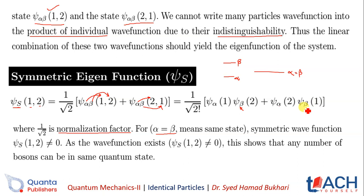The wave function exists — it does not vanish, it does not become zero. This shows that any number of bosons can be in the same quantum state. Is mein jo particle 1 tha aur jo particle 2 tha, woh dono ek hi state mein aa sakte hain. Yeh symmetric wave function ya bosons ki ek bohat important property aa gayi hai, kyunki symmetric wave functions boson particles ko represent karte hain.